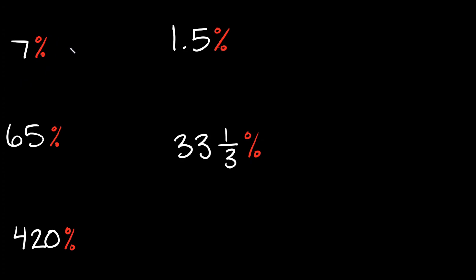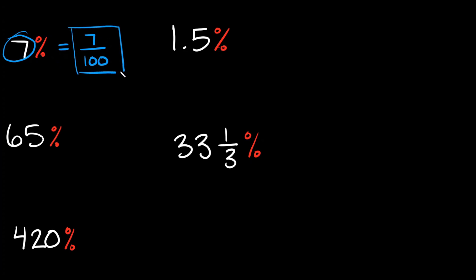So 7% written as a fraction — remember the bottom is always 100, and the top is just whatever number you have, so since we just have a 7 here that's what goes up top. So 7% as a fraction would be 7 over 100, and we can't reduce that anymore so that's our final answer.